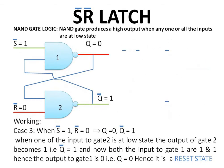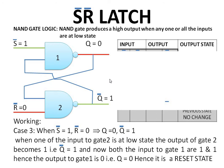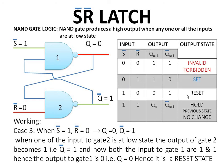Case three: when S̄ is equal to one and R̄ is equal to zero. Under this condition, we take gate two first because it has one low input. Because it has a low input, it produces a high output. This high output is fed back to gate one. Now gate one has both high inputs and produces a low output. Since the normal output Q is at zero or low state, this is called the reset state.